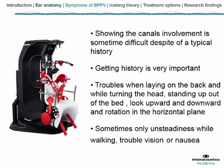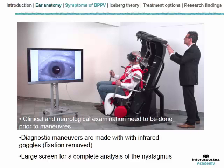Usually the patient has some nausea but not always, and sometimes will present some unsteadiness, isolated unsteadiness or drunkness sensation while walking. Sometimes you can find some isolated troubled vision or isolated nausea that usually improves during the day. Of course you will make a clinical and neurological examination seriously, because if you find some clinical impairment of the neurological system you will perform MRI to avoid missing a central disorder.